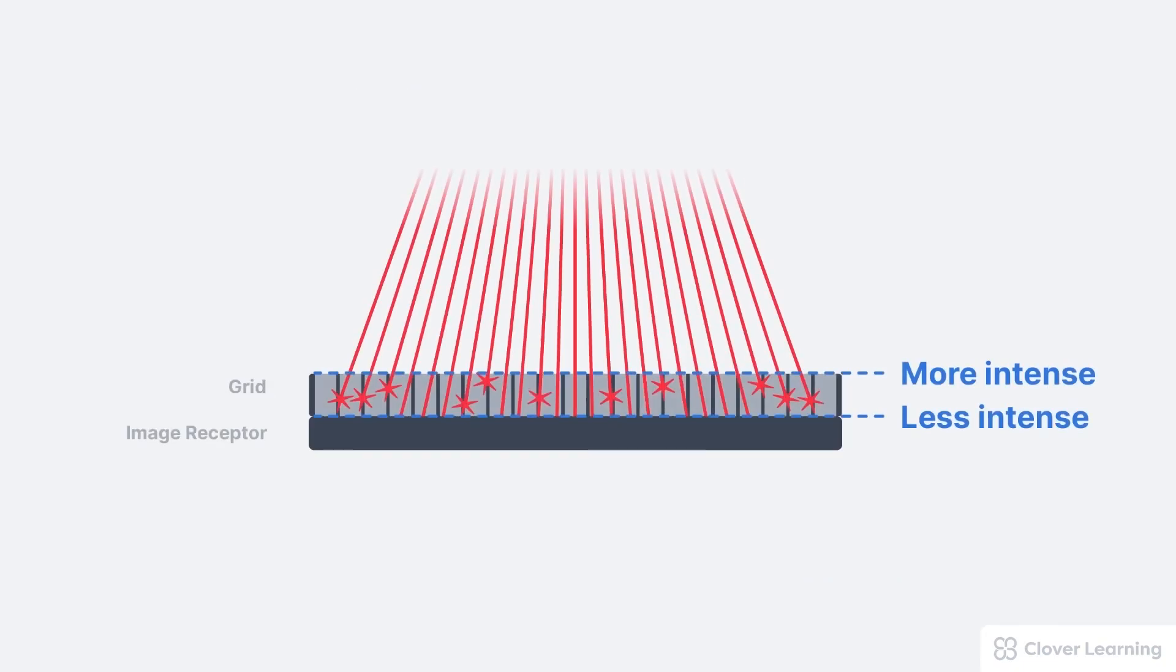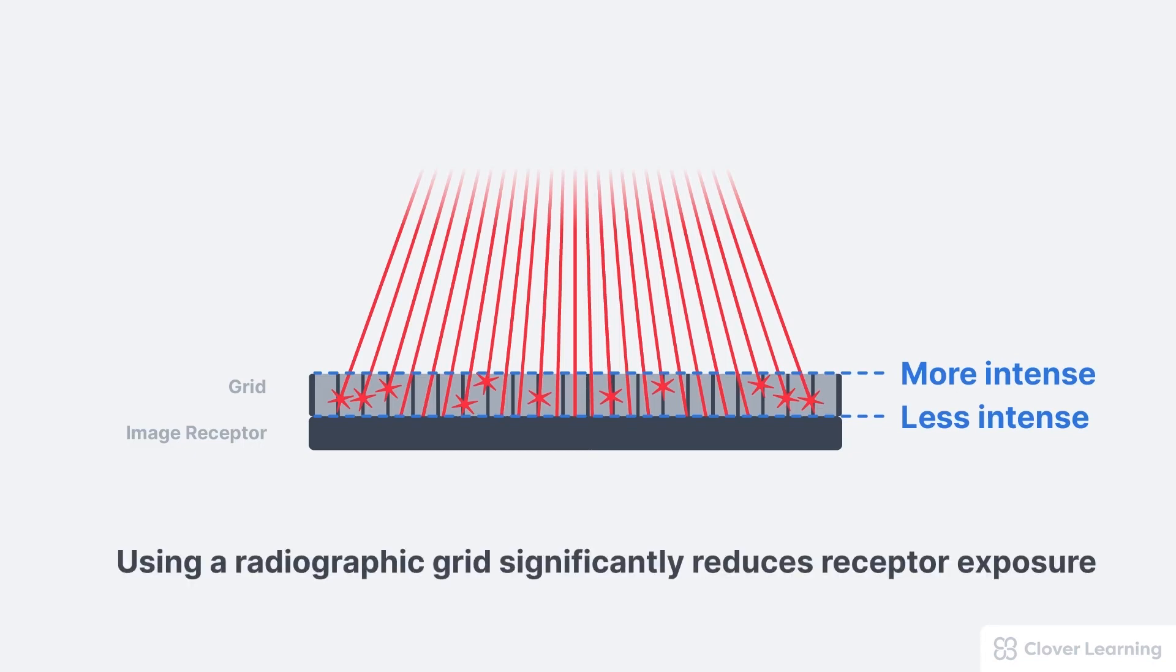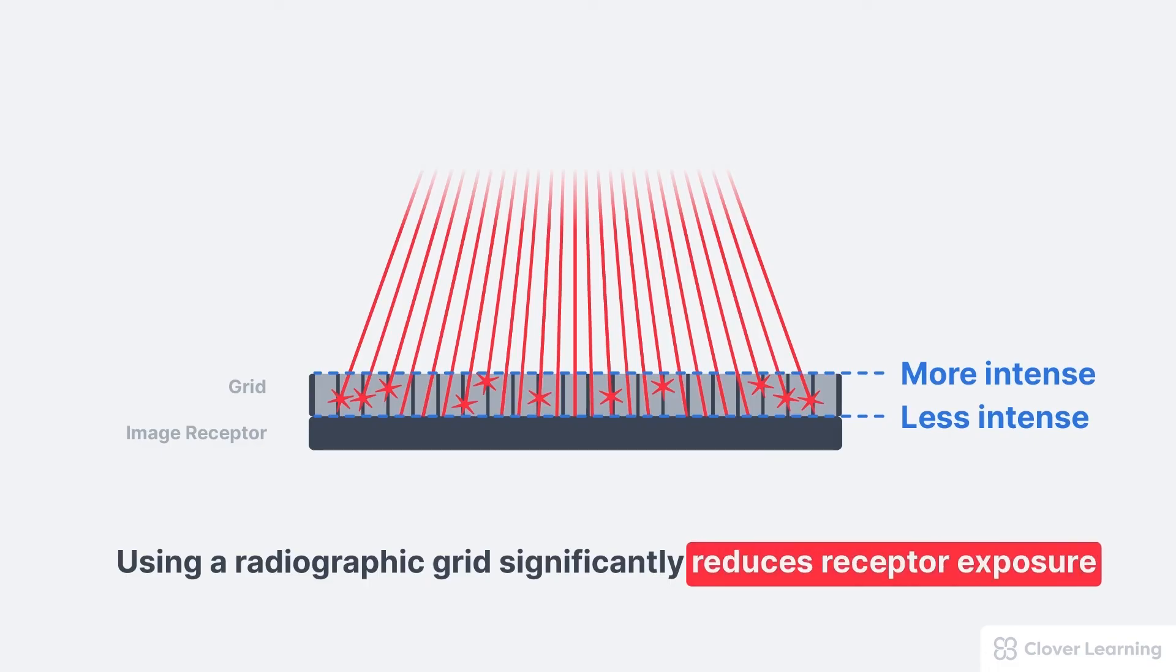Patient dose is also a consideration because using a grid does require a significant increase in the exposure technique. Here's why. Grids absorb mostly scatter radiation, but a percentage of the useful beam is also absorbed. As a result, using a grid significantly reduces the receptor exposure.